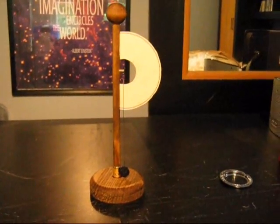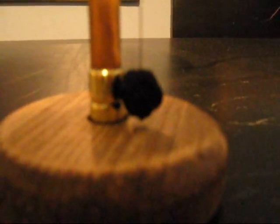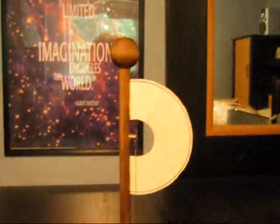It was named a Pith Ball Electrometer because that ball right there is typically made of a substance called Pith, which is pulled from the middle of plant stems and then covered in conductive paint.